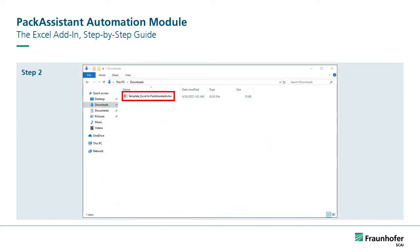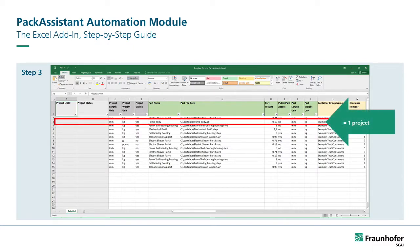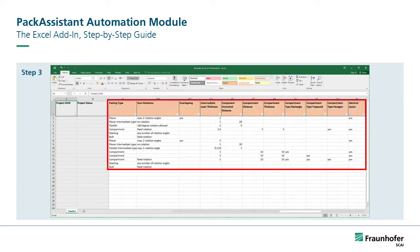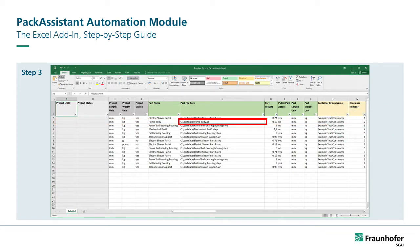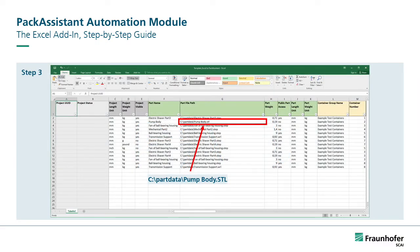Step 2: Open the template file template-excel-to-pack-assistant.xlsx in Excel. Step 3: The spreadsheet allows you to fully configure the individual projects that will then be sent to Pack Assistant. Each line item defines a single project in Pack Assistant with its visibility, unit types, part, container, packing type, as well as additional settings. The values are the same as in Pack Assistant's graphical user interface. For the part file, please make sure to specify the entire file path of your part file, including both the path and the filename itself. For example, if your part is named pumpbuddy.stl and it is located in C:\part data\, then the file path to enter into the spreadsheet would be C:\part data\pumpbuddy.stl.